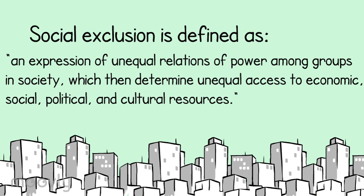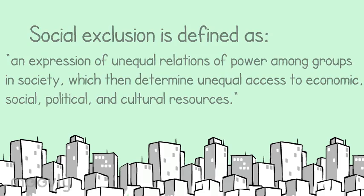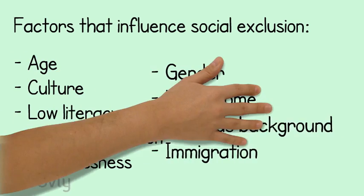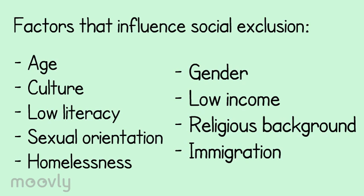Social exclusion is defined as an expression of unequal relations of power among groups in society, which then determine unequal access to economic, social, political, and cultural resources. Factors that influence social exclusion include age, culture, low literacy, sexual orientation, homelessness, gender, low income, religion, and immigration, to name a few.